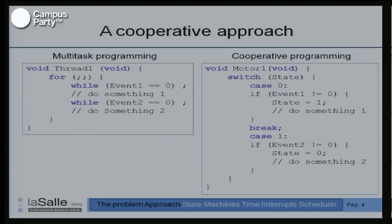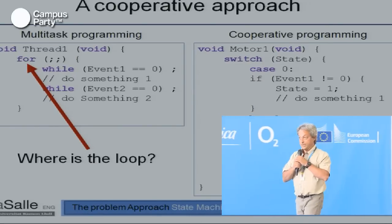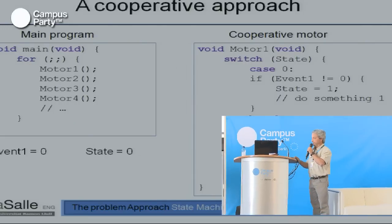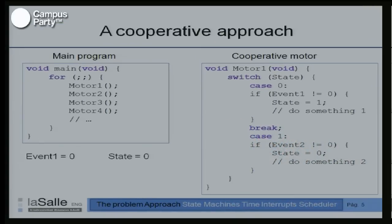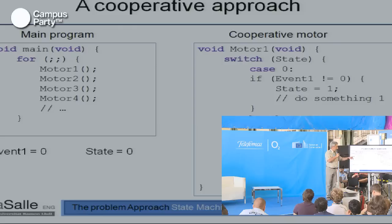In the cooperative approach, you think in states — state machines. In state zero, we evaluate the condition that event_one becomes one, then change the state. The only one loop in our system is in the main function in C. This one loop calls motor_one, motor_two, motor_three, and motor_four, eternally in an endless operation.